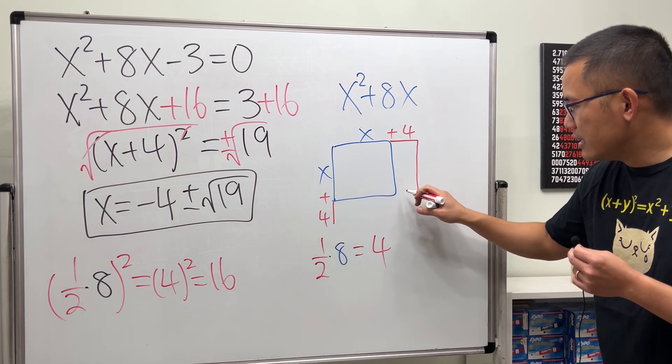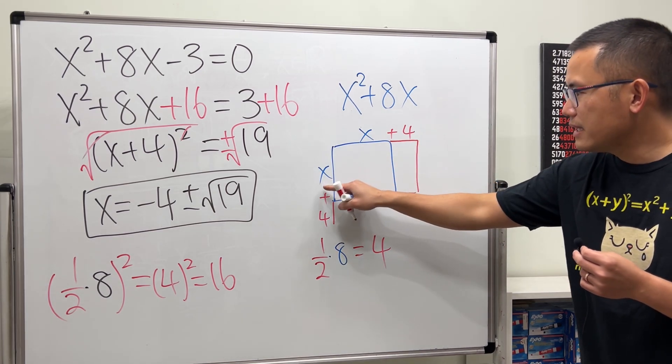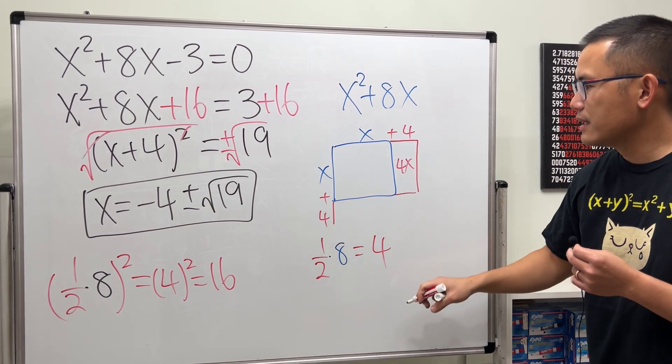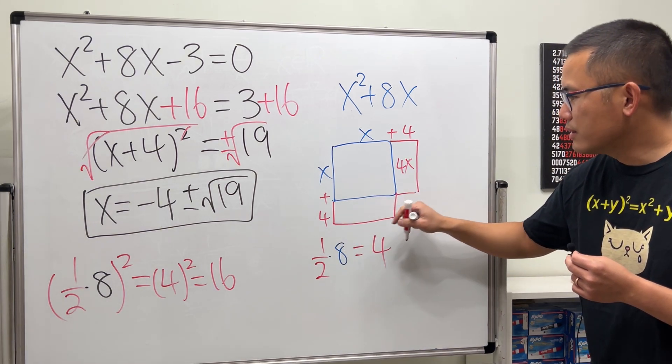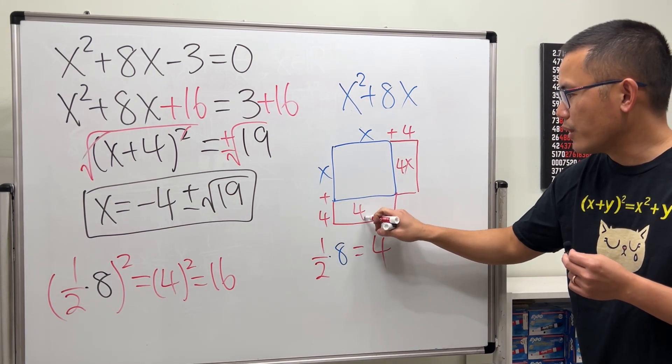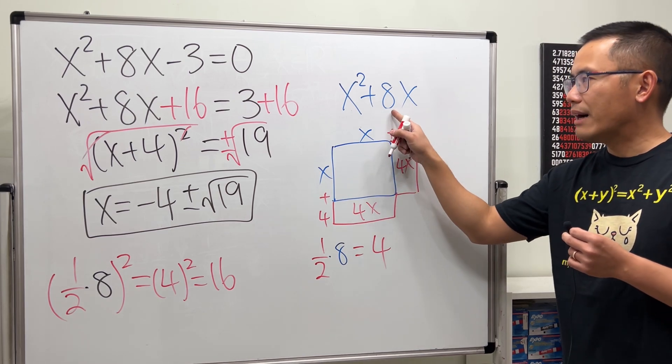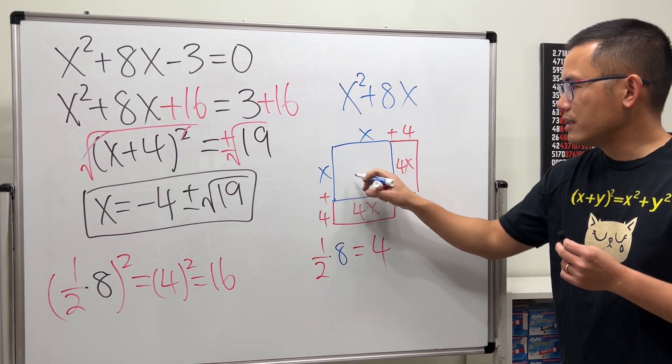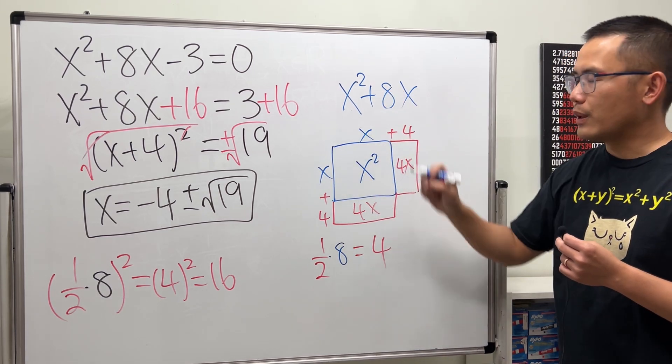Now this way you can see that this portion is 4 times x, which is 4x, and then this right here is also going to give you 4 times x, which is 4x. So together we have the 8x, and of course earlier this right here is the x² that we have.